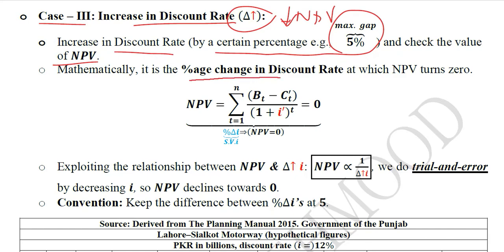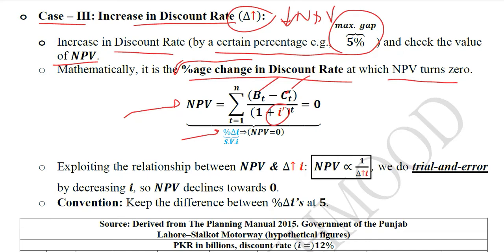Mathematically speaking, it is a certain percentage change in the discount rate that will lead the NPV to 0. So mathematically, NPV will be 0 if we calculate it using the original benefits and original costs with the new discount rate. The original costs C are used with a new discount rate — one that differs from the original because we have added some percentage change. That new level, or that increase in the percentage discount rate, is the switching value of the discount rate that will make the NPV 0.